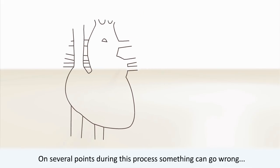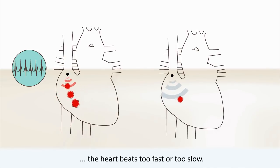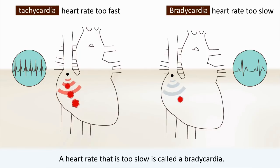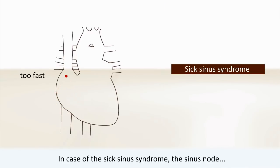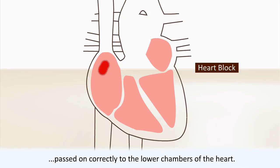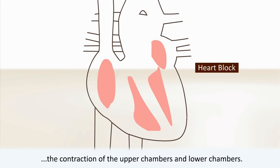On several points during this process something can go wrong, causing the heart to not contract correctly. If the sinus node sends out too many or too few impulses, the heart beats too fast or too slow. A heart rate that is too fast is called a tachycardia. A heart rate that is too slow is called a bradycardia. In case of the sick sinus syndrome, the sinus node alternates in working too fast and too slow. Heart block occurs if the impulses are not passed on correctly to the lower chambers of the heart, causing a disruption of the balance between the contraction of the upper and lower chambers.